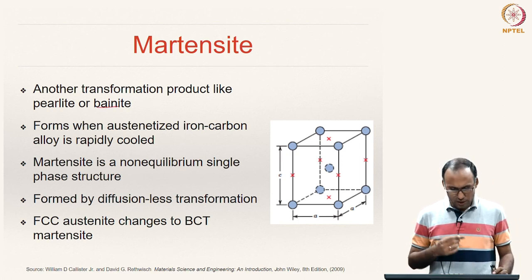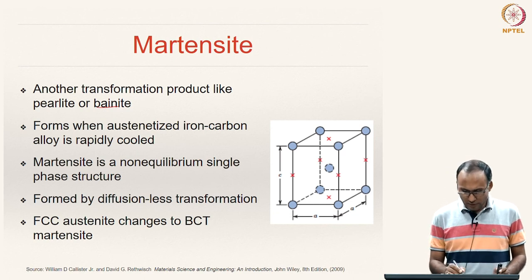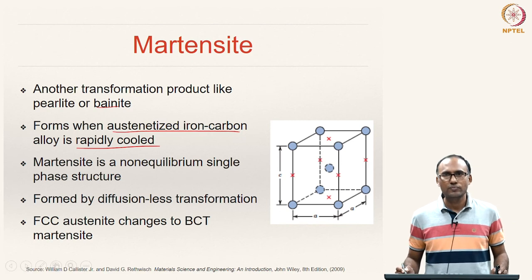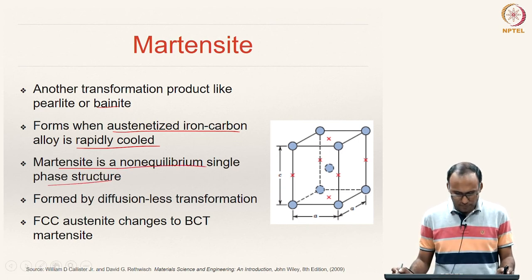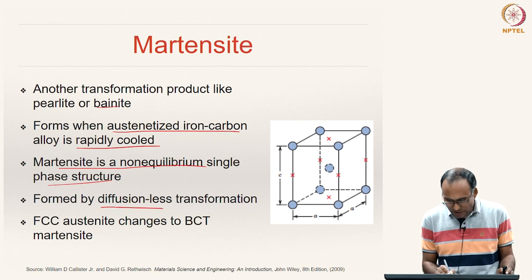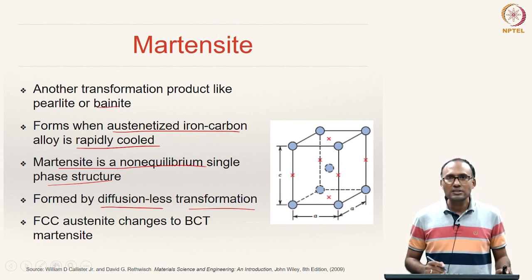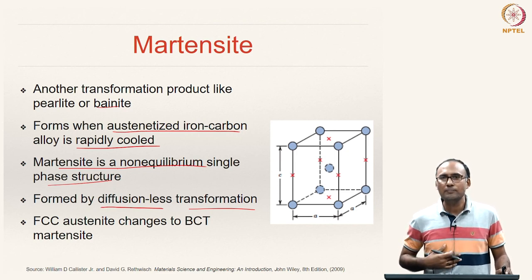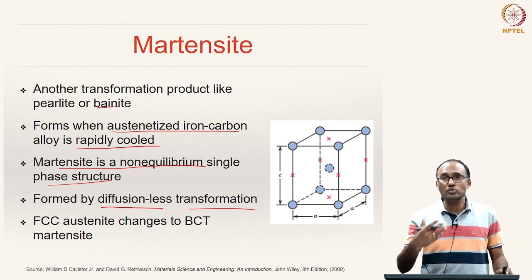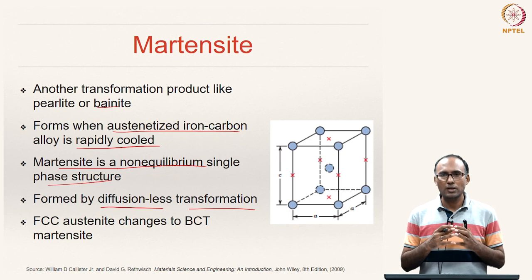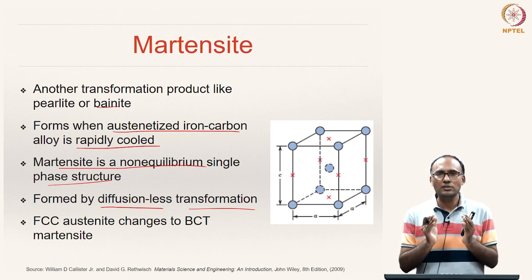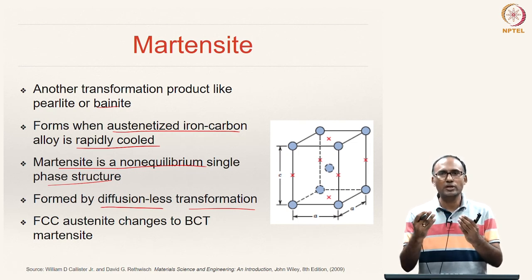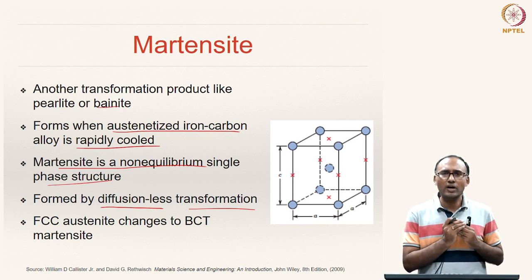Martensite is another transformation product that looks similar to bainite but is distinctly different. It forms when an austenitized iron-carbon alloy is rapidly cooled. Martensite is a non-equilibrium single-phase microstructure formed by diffusionless transformation. At room temperature austenite is FCC; rapid cooling to room temperature requires a change to BCC, but there is insufficient time for carbon to diffuse out of the FCC lattice.